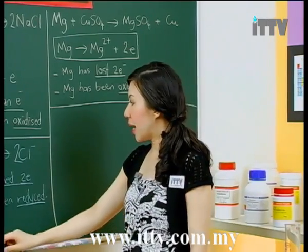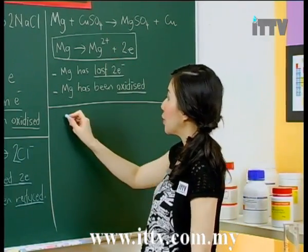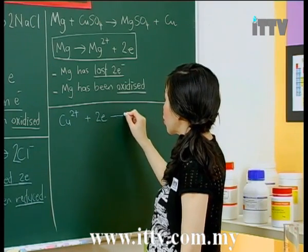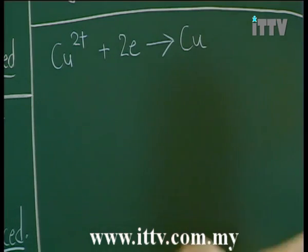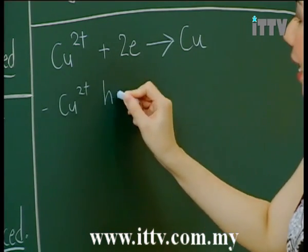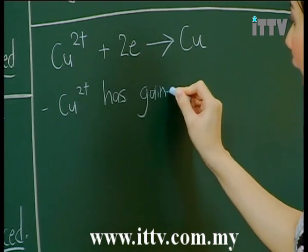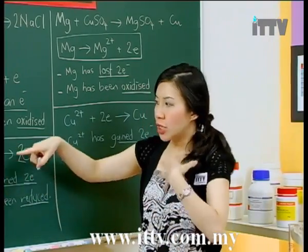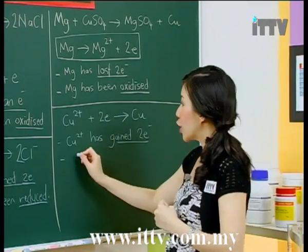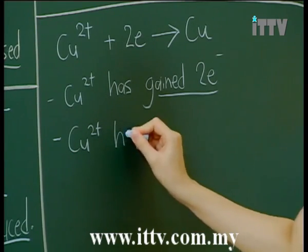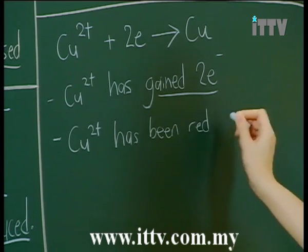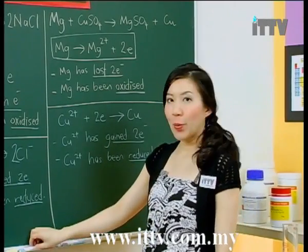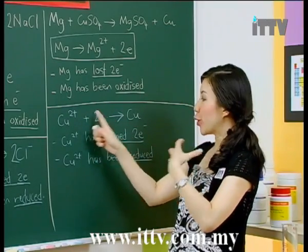For the second half equation for Cu²⁺: for Cu²⁺ to become solid copper, it would have to gain two electrons. So Cu²⁺ has gained two electrons. If a compound, element, or ion has gained electrons, we say it has been reduced — so Cu²⁺ has been reduced. Because Cu²⁺ receives and gains electrons, we know that it has been reduced.